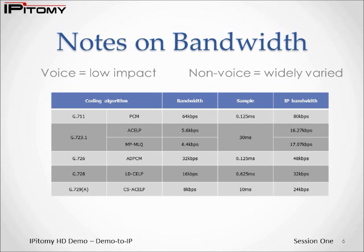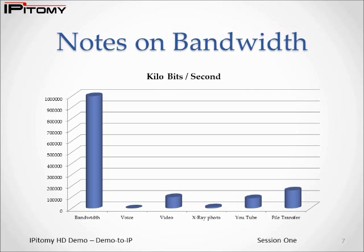Since telephone calls require two-way connections, each of the IP bandwidth requirements must be doubled. Most network deployments are capable of at least 100 megabits per second. Many today are capable of 1 gigabit per second, which is 1,000 megabits per second. Using a 100 megabit per second network example with only voice traffic, you would have enough bandwidth for 500,000 calls simultaneously.